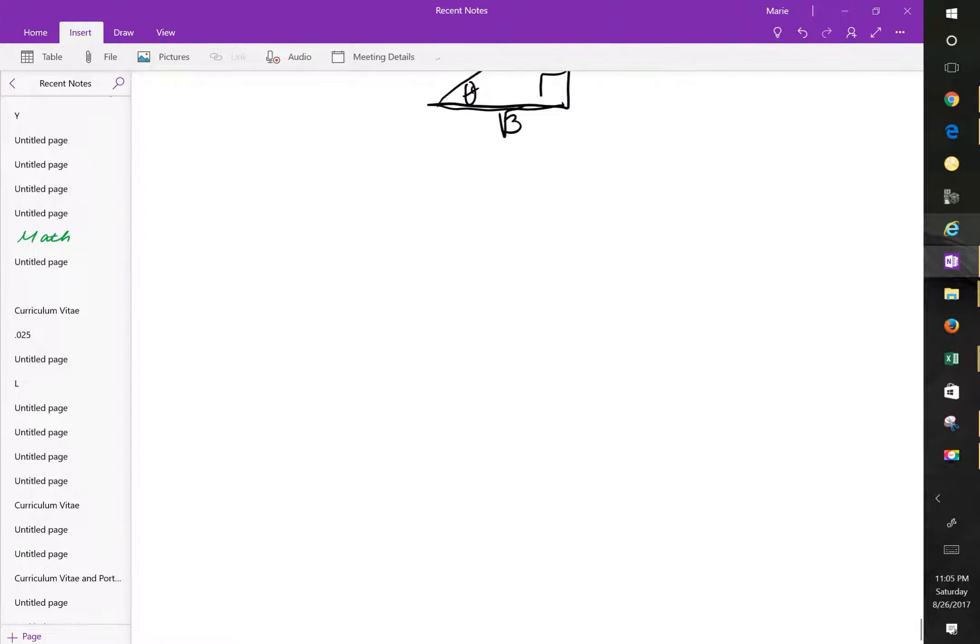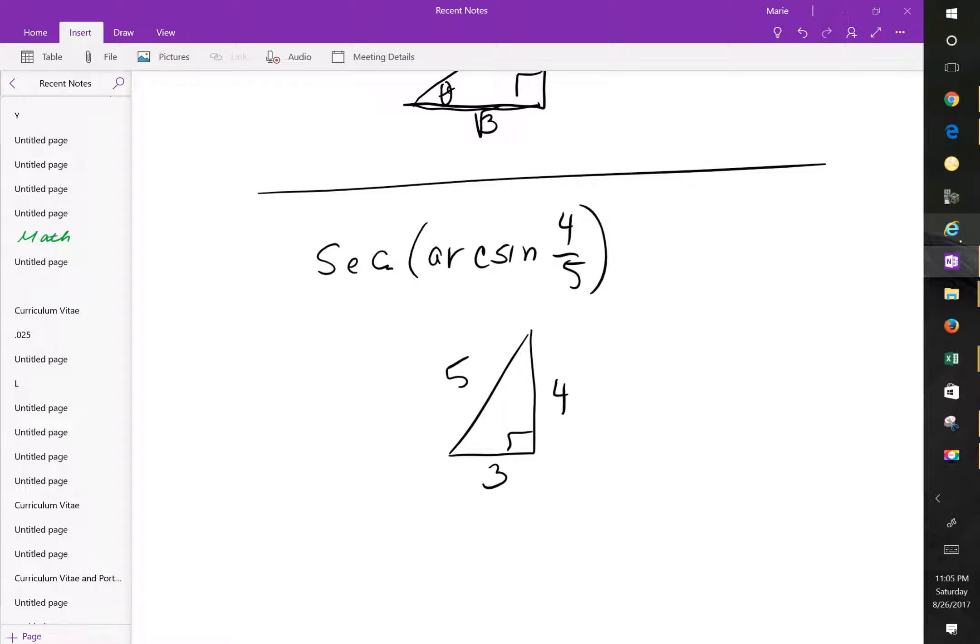Okay, and one last example. Let's do secant. If I had secant of arc sine 4 over 5. And again, we're going to draw the 3, 4, 5 triangle. All right, so here's your 3, your 4, and your 5. So I'm looking at angle theta, sitting here. If sine is opposite over hypotenuse, the secant, okay, so you need to remember, go back to your basics here.